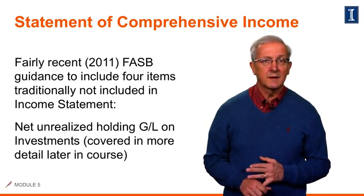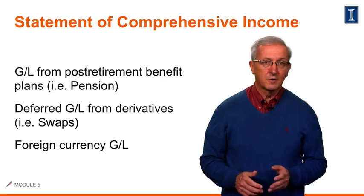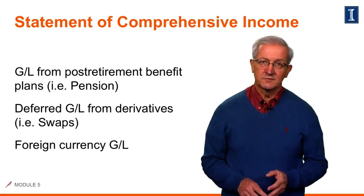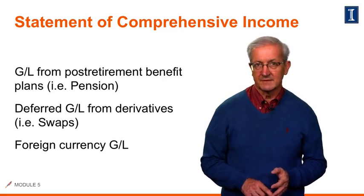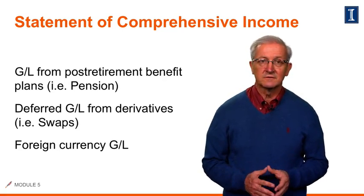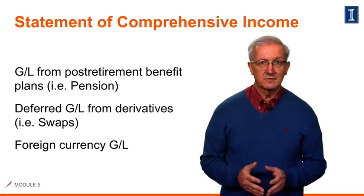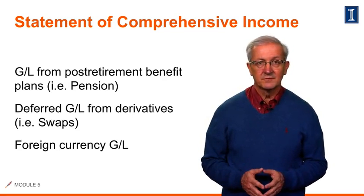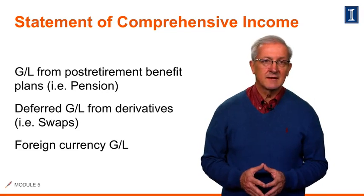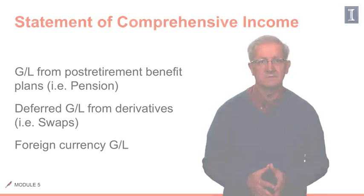First, net unrealized holding gains and losses. Also, gains and losses from our post-retirement benefit plan, such as our pensions. Thirdly, our deferred gains and losses from derivatives or swaps. And lastly, any foreign currency gains or losses.